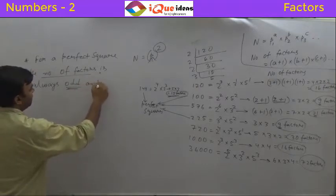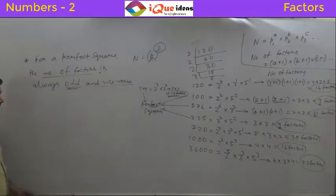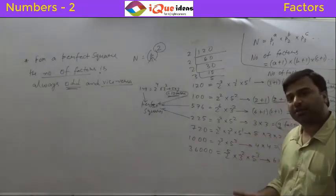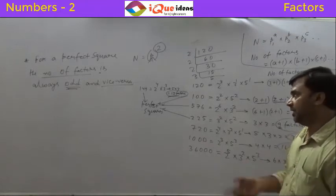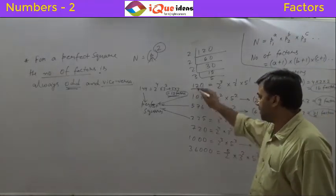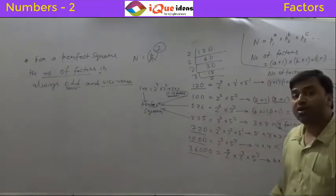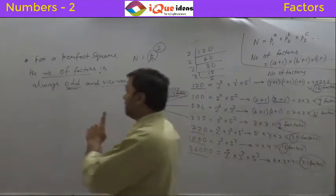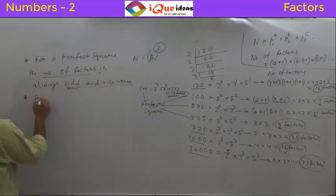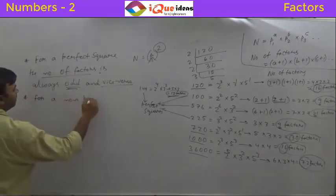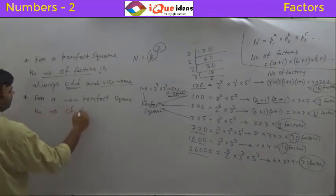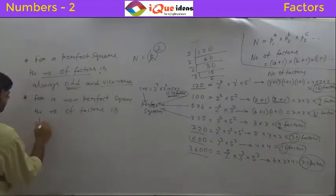Now, there is one thing I need to mention — the vice versa. If there is a number which is a perfect square, the number of factors will be odd. Similarly, if a number has an odd number of factors, it has to be a perfect square. The other way: if there is a number which is not a perfect square — like 120, 720, 1000, 36000 — these are not perfect squares. If the number is not a perfect square, the number of factors will always be even, as we can see: 16, 72, and so on. For a non-perfect square, the number of factors will always be even.